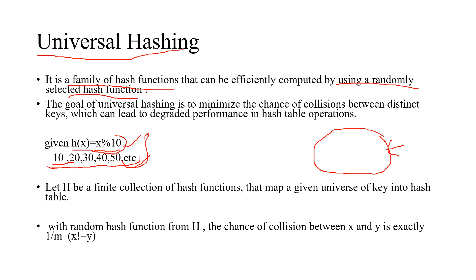That is the goal of universal hashing — to reduce the number of collisions. Universal hashing increases the degree of randomness because for every element you are selecting a random hash function, and because of that you get a different index, which reduces the number of collisions.